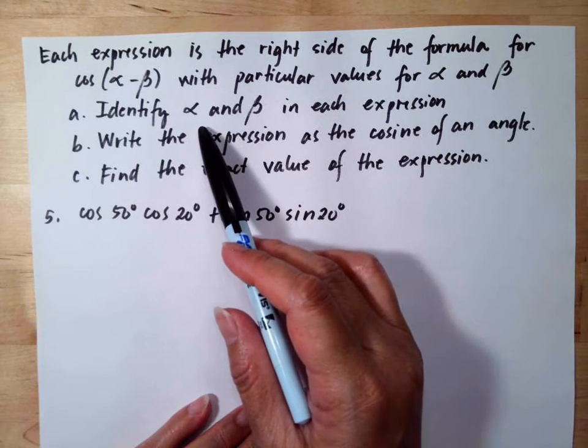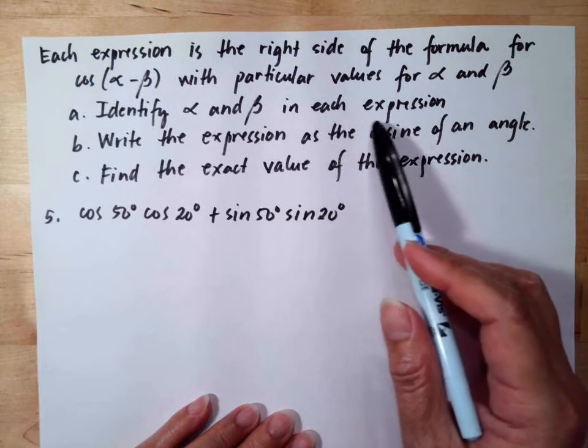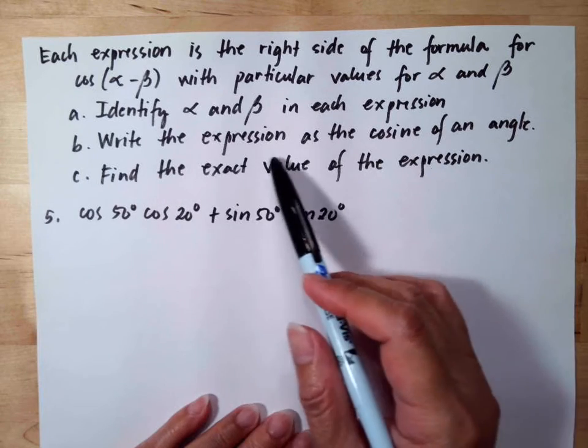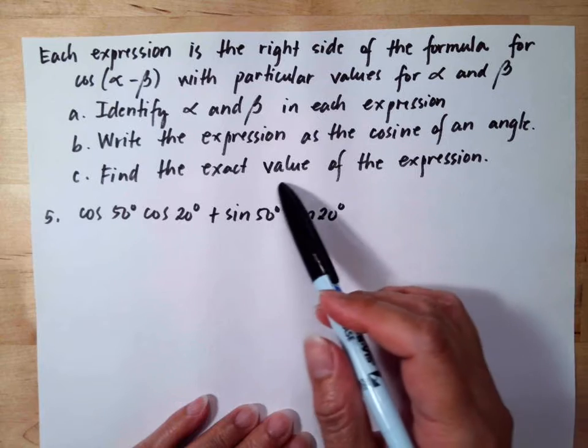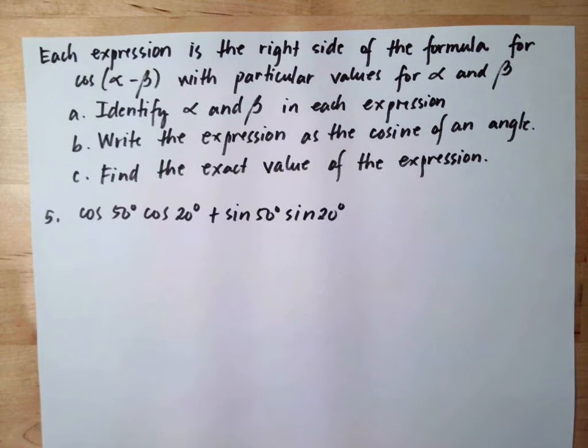Identify alpha and beta in each expression. Write the expression as the cosine of an angle. And last, find the exact value of the expression.